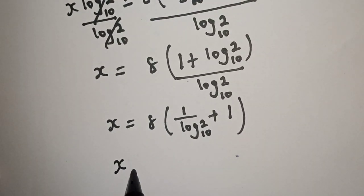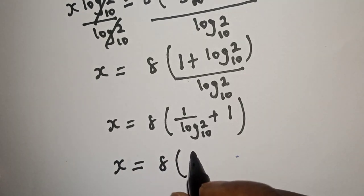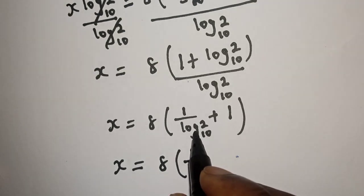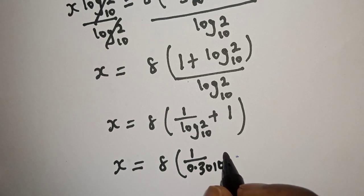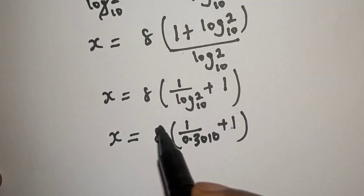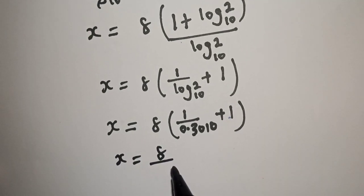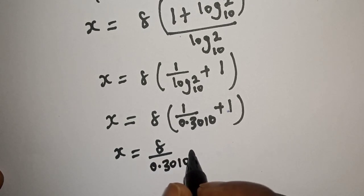Log 2 base 10 is equal to 0.3010. Opening the bracket with 8: s is equal to 8 over 0.3010 plus 8 times 1, which gives us the final value of s.